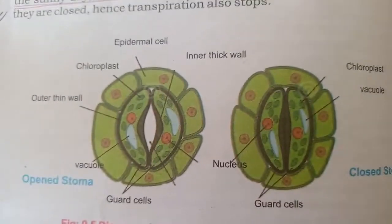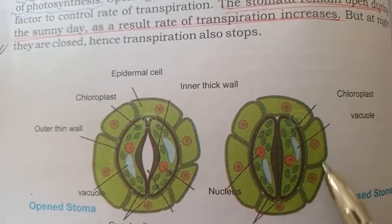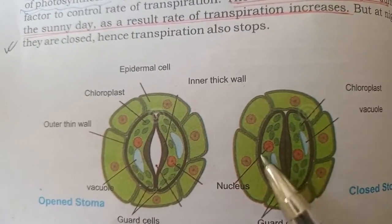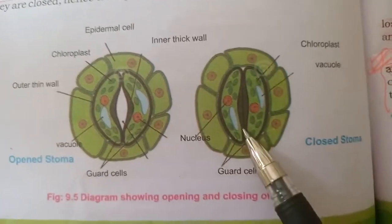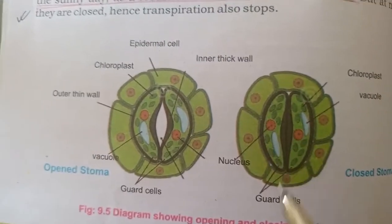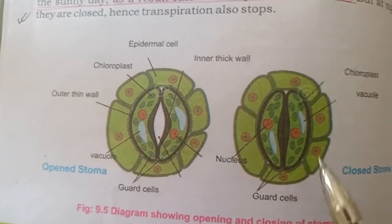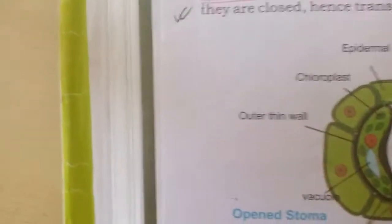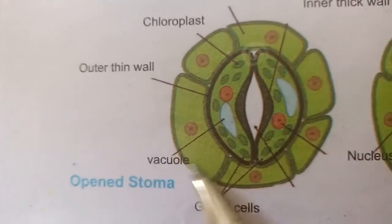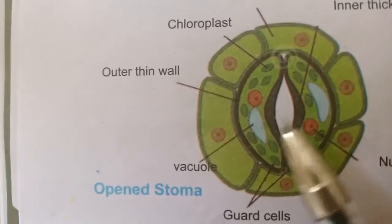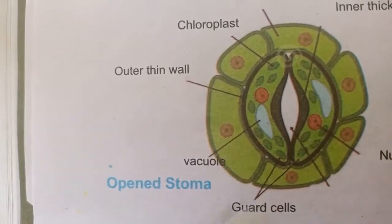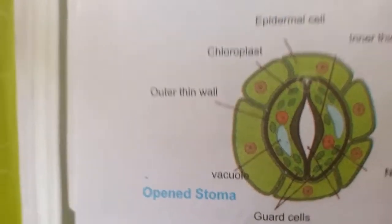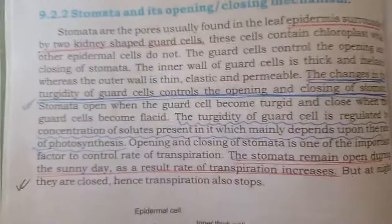Page 180 پر diagram میں آپ کو two guard cells نظر آ رہے ہیں اور اس وقت stomata close ہے۔ اس کی example لیجیے جیسے گھر کا door بند ہو — آپ اندر یا باہر نہیں جا سکتے۔ لیکن جب guard cells turgid ہوتے ہیں — یعنی پانی سے بھر جاتے ہیں — تو stomata open ہو جاتا ہے اور اس سے water loss ہوتا ہے۔ یہ ہماری syllabus میں نہیں ہے لیکن سمجھنے کے لیے بتا رہی ہوں۔